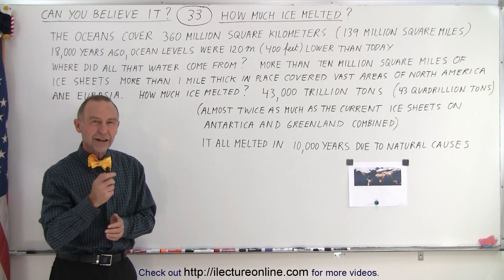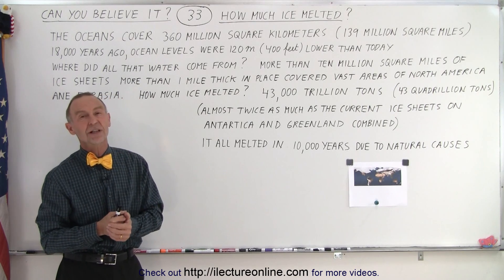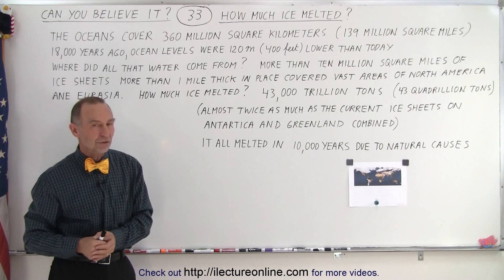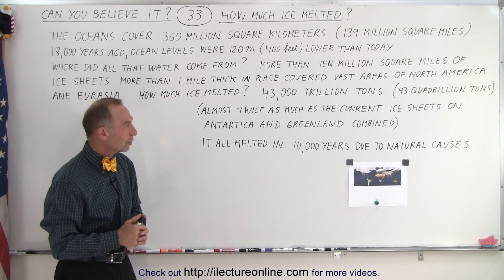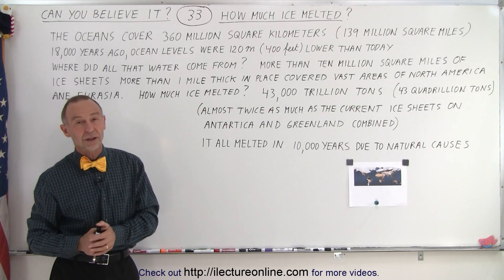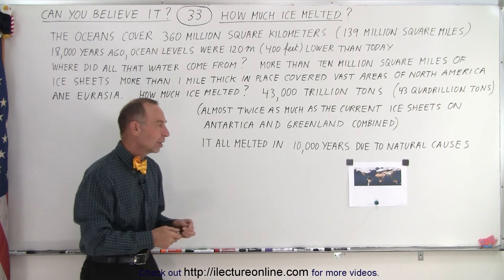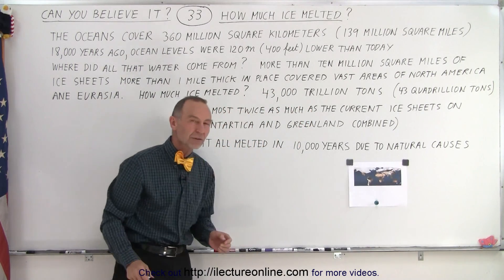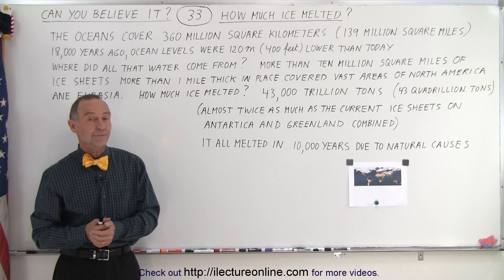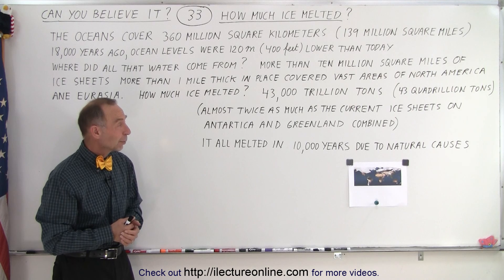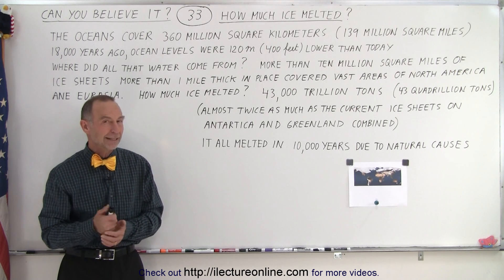That's a lot of ice — ice that melted for natural reasons due to the change in climate between 18,000 and 8,000 years ago. 43 quadrillion tons — 43,000 trillion tons. It is almost beyond imagination how much ice was covering these vast stretches, millions and millions of square miles of land in North America and Eurasia. That is quite something to contemplate happening over that 10,000-year period.